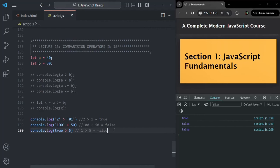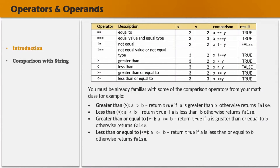We also have equality operators. In JavaScript, we have two types: equality check using double equal to, and strict equality check using triple equal to. Similarly, not equal to does a non-strict equality check, while not equal to equal to does a strict not-equality check. Double equal to and not equal to only compare values — they do not compare the data type. But triple equal to and not equal to equal to compare both value and data type.